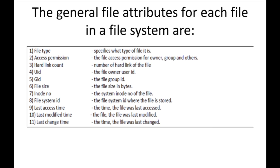Hard link count gives the number of hard links of the file. A hard link means it is a path — the path of a particular file. The same file can have two different paths. So hard link count is nothing but the number of paths for a particular file. I will discuss that in detail in the upcoming videos.